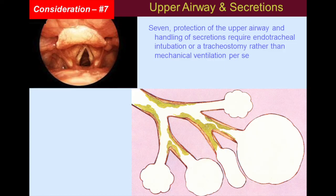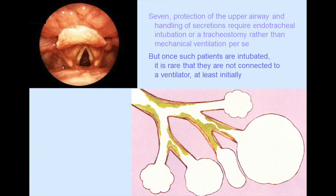Seven: protection of the upper airway and handling of secretions requires endotracheal intubation or a tracheostomy rather than mechanical ventilation per se. But once such patients are intubated, it is rare that they are not connected to a ventilator, at least initially.